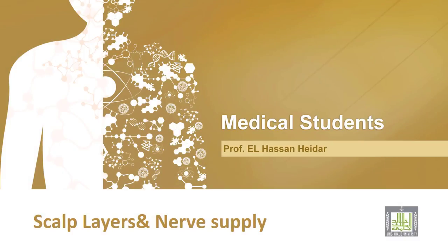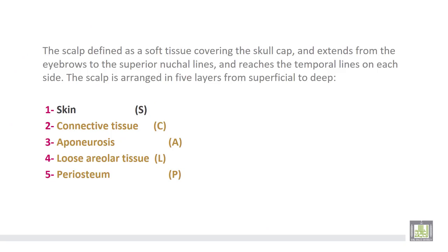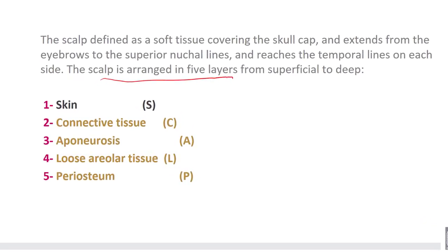To start with, a discussion of the scalp and nerve supply of the scalp. The scalp is defined as a soft tissue covering the skull cap and extends from the eyebrows to the superior nuchal lines, and reaches the temporal lines on each side. The scalp is arranged in five layers from superficial to deep.